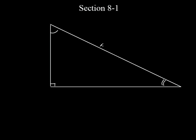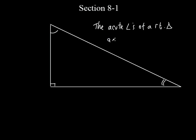So both of these angles — the acute angles of a right triangle — we've used the word supplementary before, which means they add up to 180. But what's the word if they add up to 90 degrees? Complementary. So the acute angles of a right triangle are complementary.